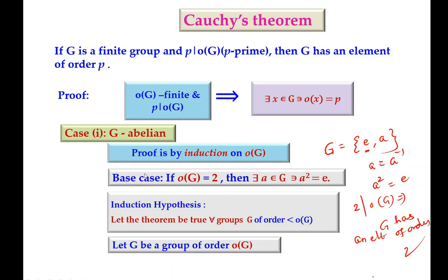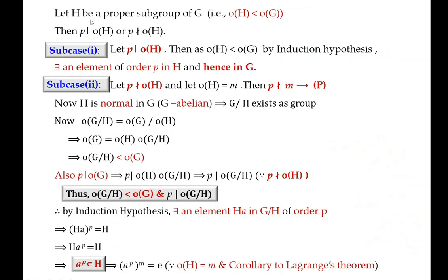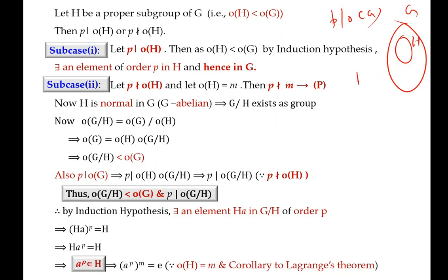We shall assume the theorem to be true for all groups whose order is less than the order of G. Now we consider G to be a group of order |G|. We take H to be a proper subgroup of G, so the order of H is strictly less than the order of G. Since P divides the order of G, we have two possibilities: P may divide the order of H, or P may not divide the order of H.